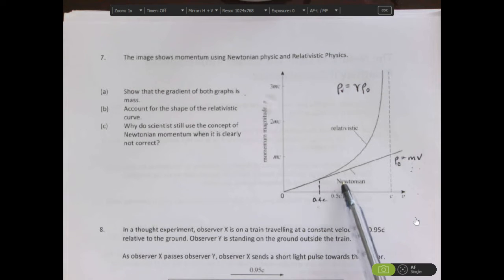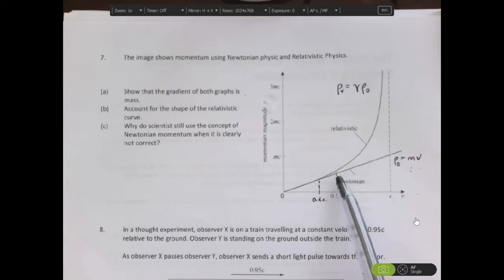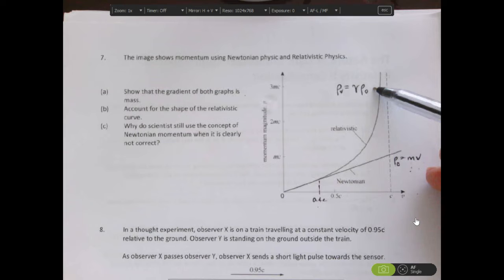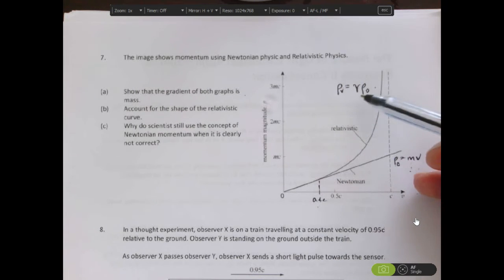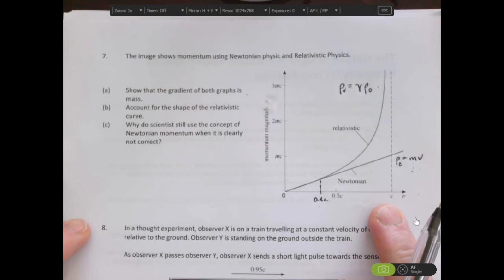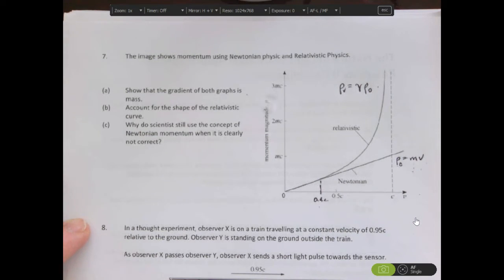However, as we get faster than the speed to the half map at this point here, we start to see it's starting to diverge away. And therefore, we really need to take into account relativistic physics. So we're going to have to use our gamma factor. So I'm just going to formally show that the gradient of both graphs is mass.